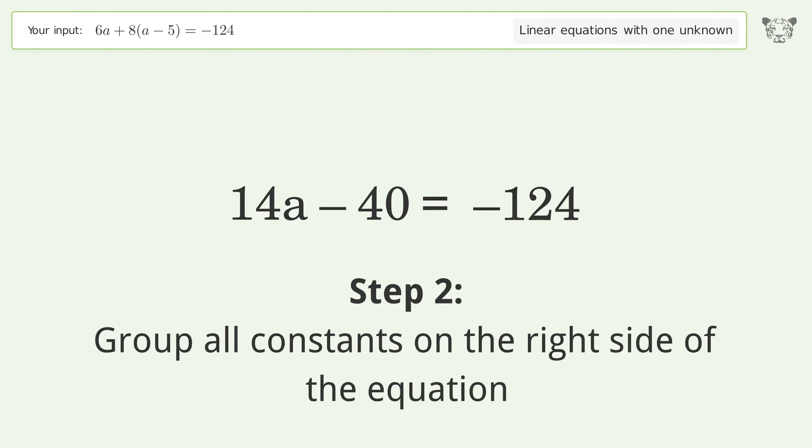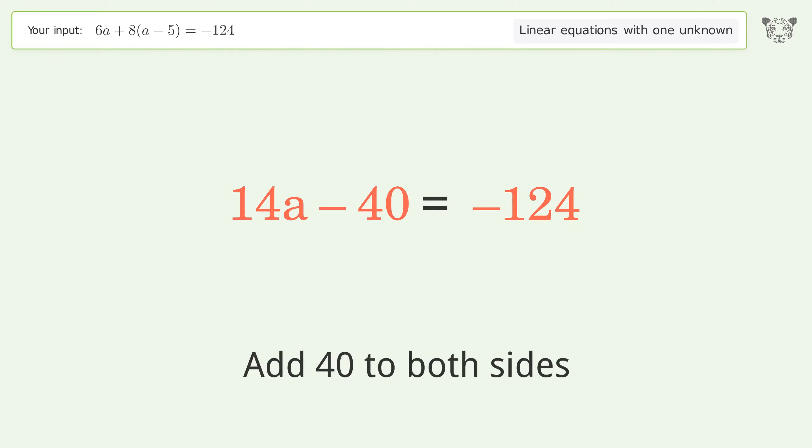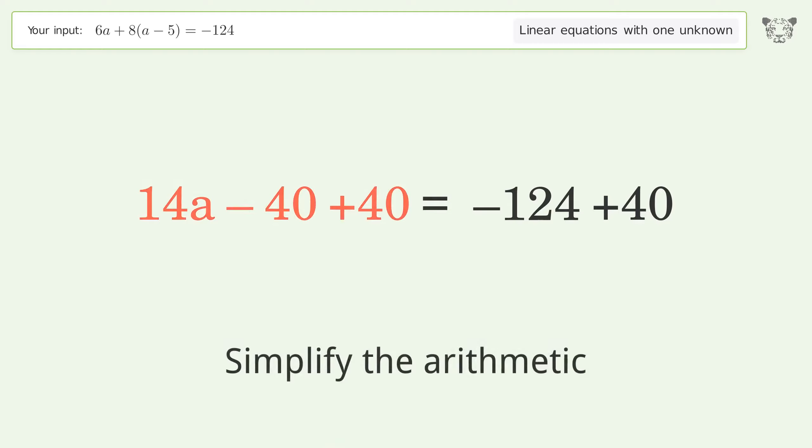Group all constants on the right side of the equation. Add 40 to both sides and simplify the arithmetic.